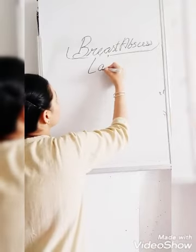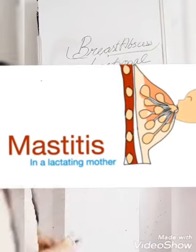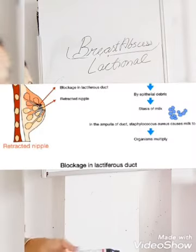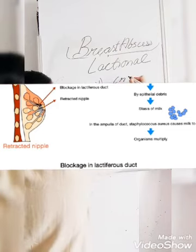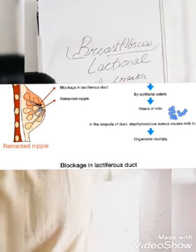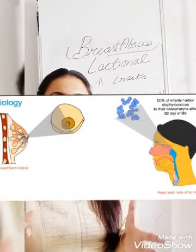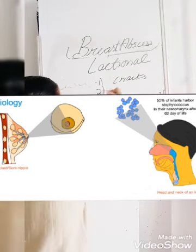Now what are the causes or predisposing factors? The first cause is cracks in the nipple. If the nipple is cracked, infection can easily move from the nipple into the breast. Other causes include a retracted nipple.